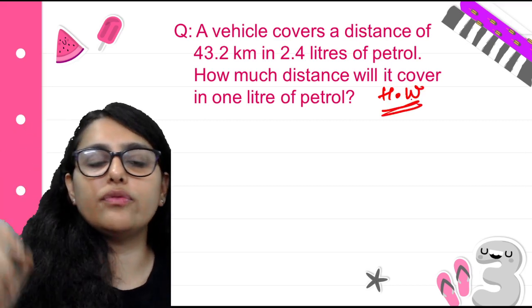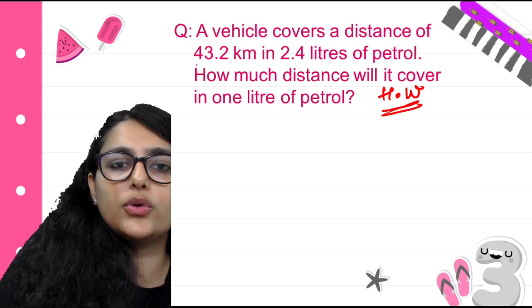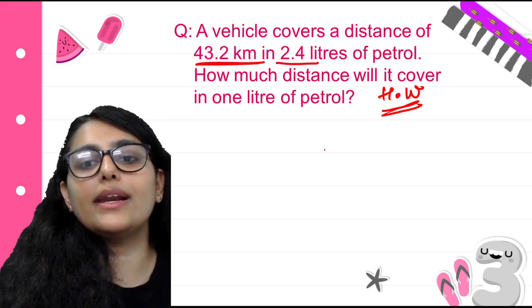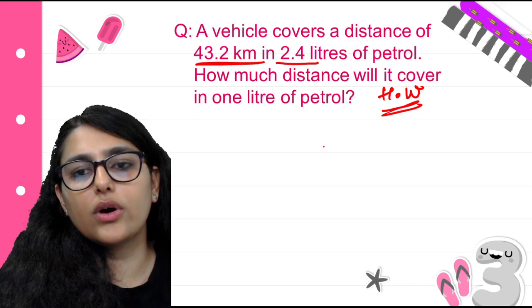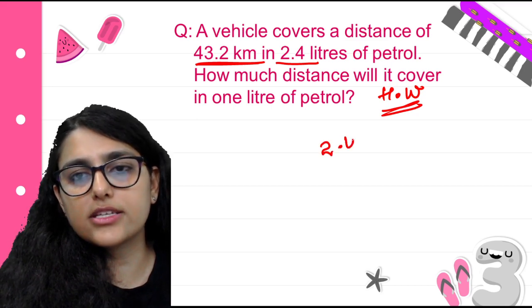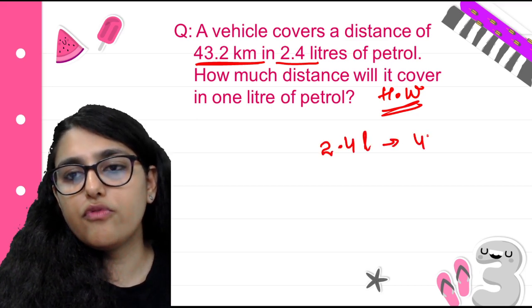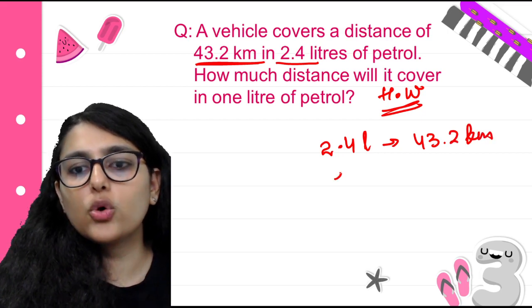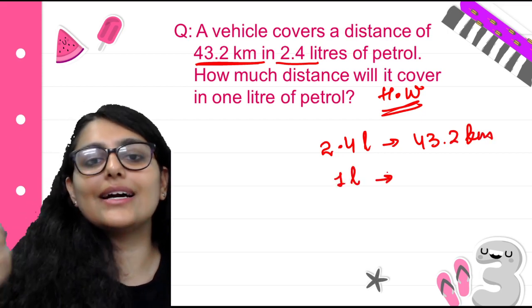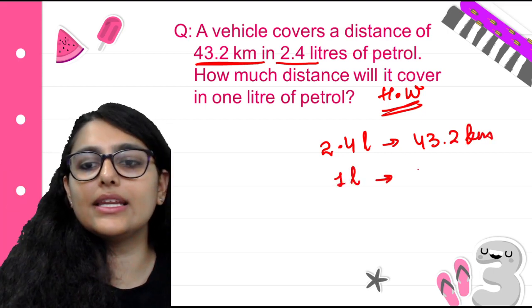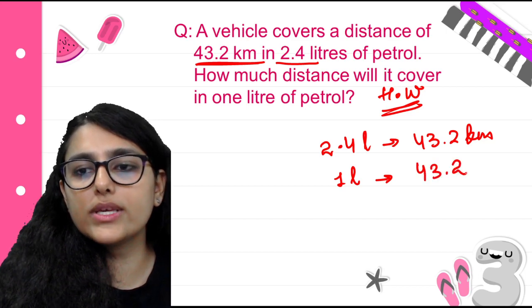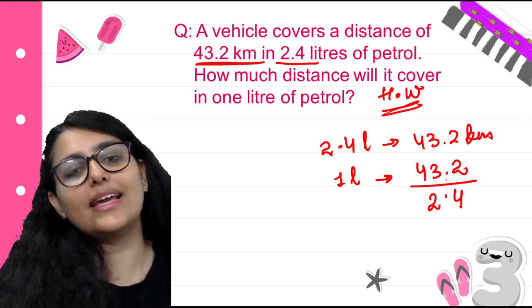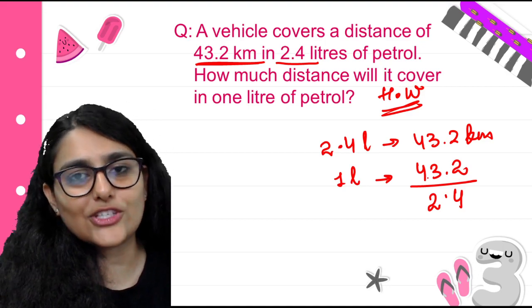Homework question: a vehicle covers a distance of 43.2 km in 2.4 liters of petrol. How much distance does it cover per liter? We are given the value for 2.4 liters and need to find for 1 liter, so we divide. Do this division and tell me the answer in the comment section.